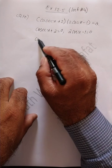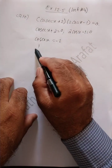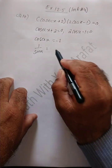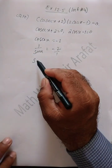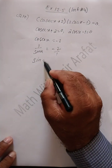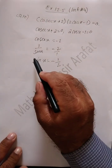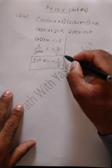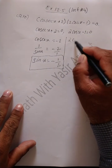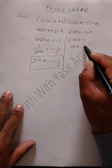So here cosec x equals minus 2. Since cosec x is 1 over sin x, it equals minus 2. Taking the reciprocal, sin x equals minus 1/2. We will solve this first. Then from 2cos x = 1, we get cos x = 1/2.